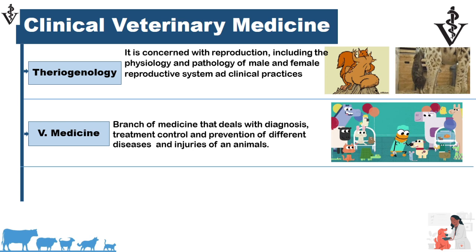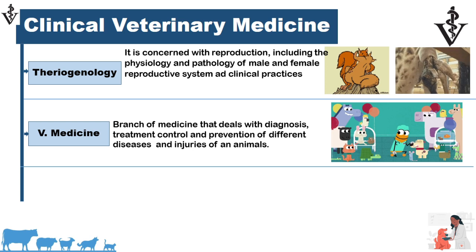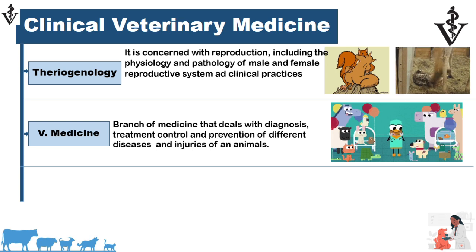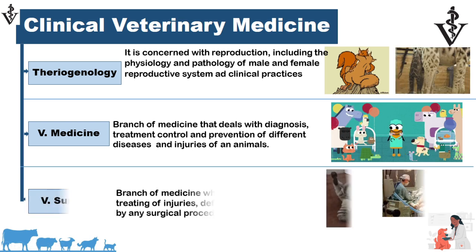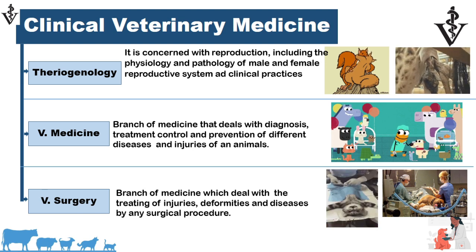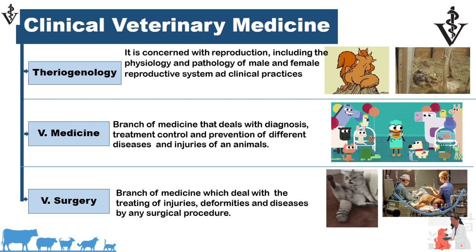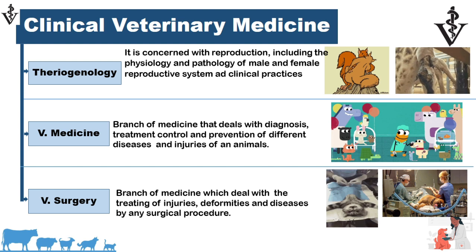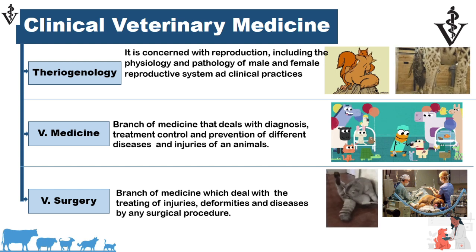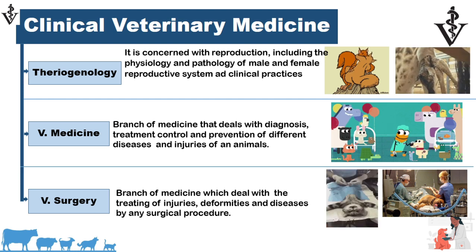Veterinary medicine is a science which deals with the diagnosis, treatment, control, and prevention of different diseases and injuries in animals — covering the different kinds of diseases found in different types of animals. Veterinary surgery is a science which deals with treating injuries, deformities, and disease by surgical procedures. For example, if an animal is suffering from a deformity or disease requiring a surgical procedure, this is what we study in veterinary surgery.